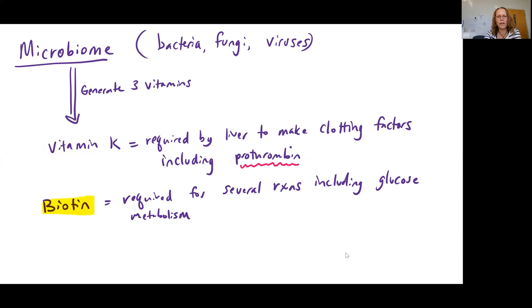Biotin is another important vitamin that's being produced by your microbiome. This is going to be required for several reactions that our cells do, including glucose metabolism. So it's going to be key.